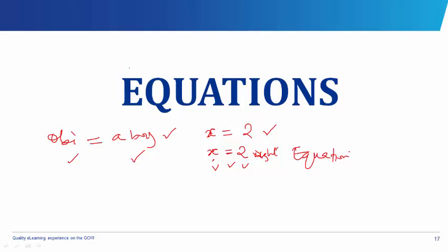Other forms of equations: you can have something like 4 times 6 equals 24. The value on this side is the same as the value on this side. Now for mathematical problems, what you mainly solve in equations is — instead of having 4 times 6 equals 24 — you will now be given something like 4 times an unknown equals 24.